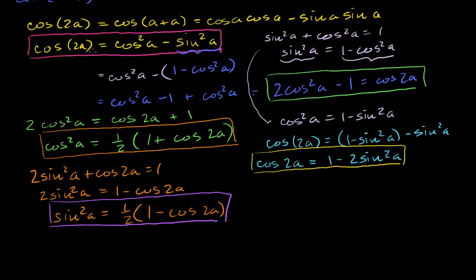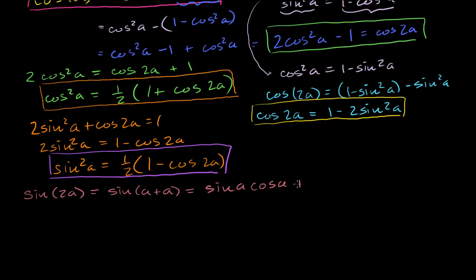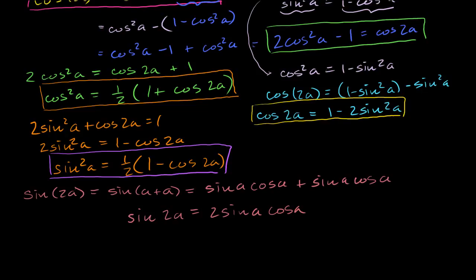Now let's find an identity for the sine of 2a. Sine of 2a equals sine of a plus a. Using the sine addition formula, that equals sine of a times cosine of a plus sine of a times cosine of a — I just wrote the same thing twice — so this equals 2 sine of a cosine of a. So sine of 2a equals 2 sine of a cosine of a.